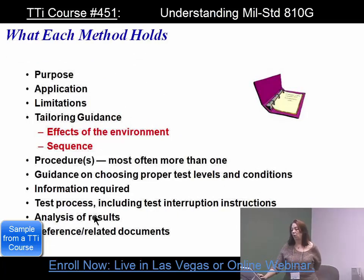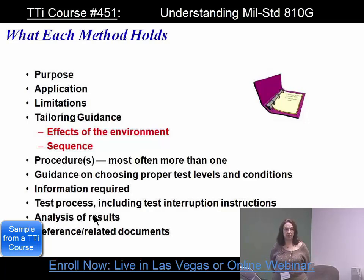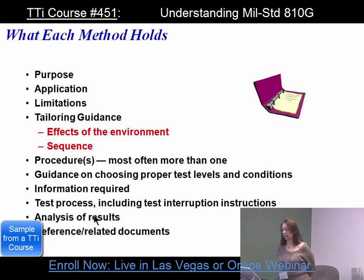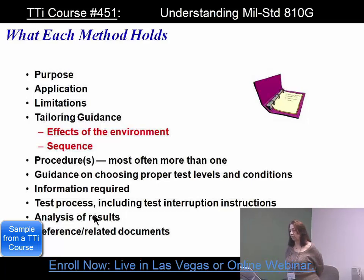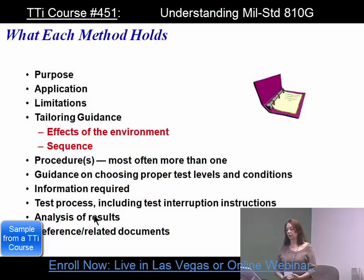Each method holds a purpose, an application, and limitations — what the method is not supposed to be used for. There is tailoring guidance, including the effects of the environment and information on the test sequence. The procedures, most often more than one, include guidance on choosing proper test levels and conditions, what information will be required, the test process including what happens if there's a test interruption, analysis of results, and a list of reference and related documents.